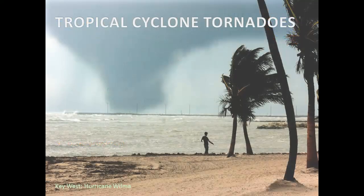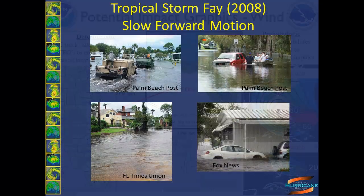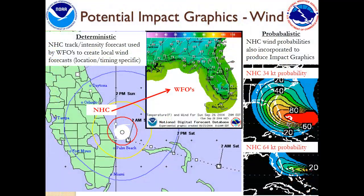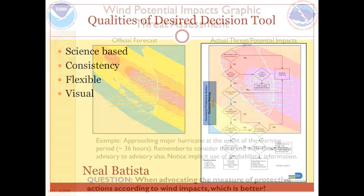And let's not forget the threats posed by tropical cyclone related tornadoes and flooding from heavy rainfall. We'll also illustrate how deterministic and probabilistic information can be used together to make threat assessment, to help you plan for the threat and communicate the potential impacts to the public so you know what to prepare for.